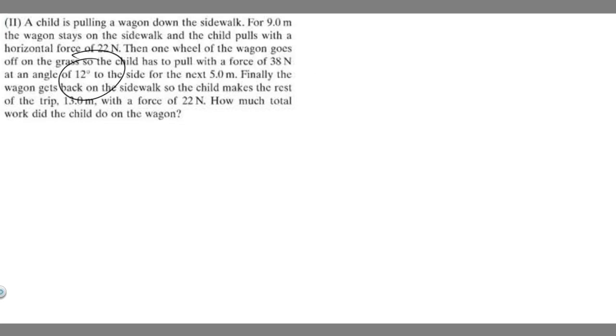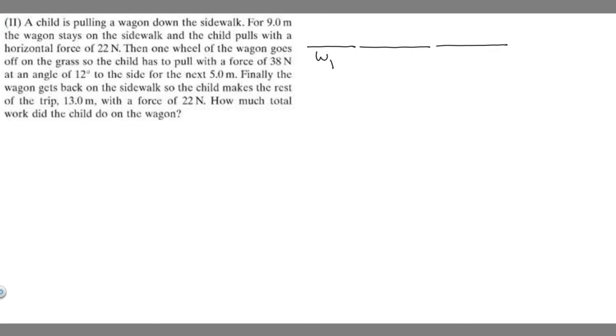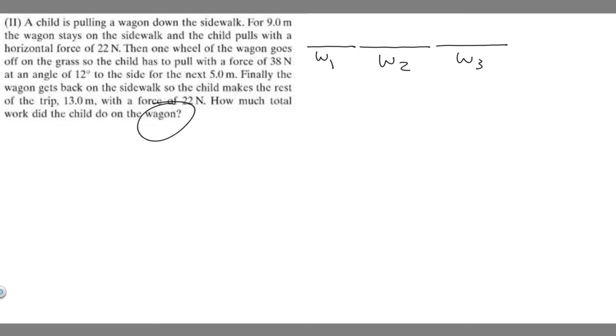So there are going to be three different scenarios here. The first one: they go 9 meters on the sidewalk at 22 newtons. The next one: it goes off onto the grass, 38 newtons at 12 degrees for 5 meters. Then it makes the rest of the trip, 13 meters at 22 newtons. What we're trying to do is find the total work done, so the total work is just going to be equal to W₁ plus W₂ plus W₃. We just need to find the individual work for each of these paths.